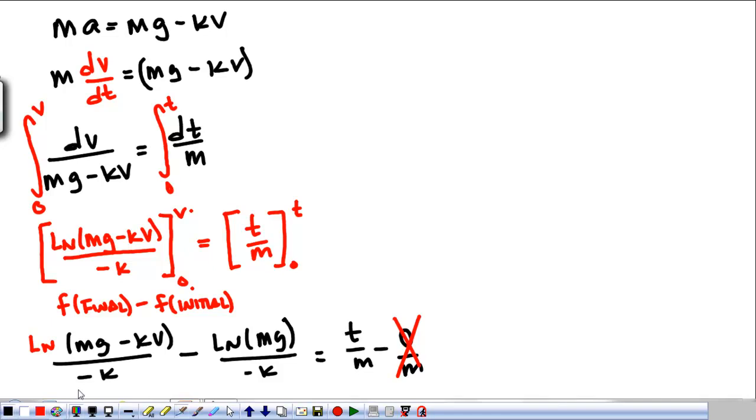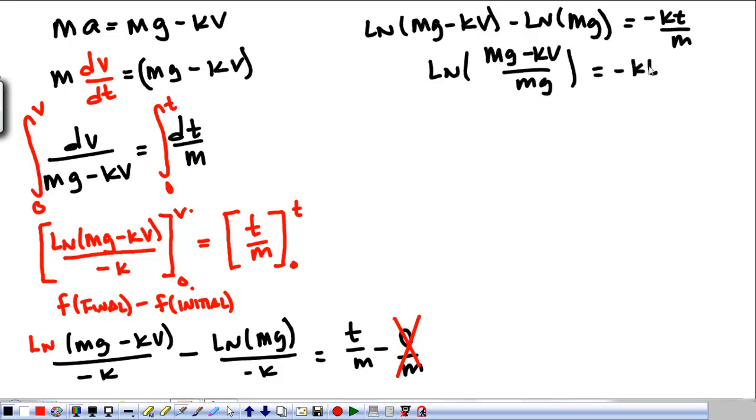So, we are going to multiply both sides by negative k to get rid of it. So, we've got the natural log of Mg minus kv minus the natural log of Mg, and that's equal to negative kt over m. Properties of natural logs, we all remember very clearly. The natural log of Mg minus kv over Mg is equal to negative kt over m. At this point, we're just doing algebra. Not that that makes it easy, it just means that's all we're doing now.